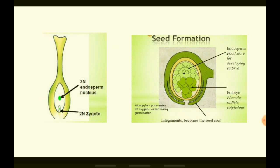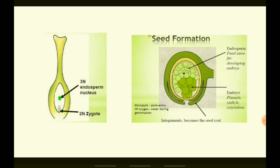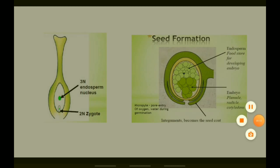In this diagram you may observe the female reproductive part of the flower. You can see the stigma, the style, the ovary, and within the ovary you can see the ovule.